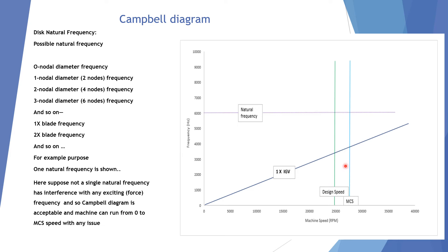In this case, you can see that the natural frequency does not intersect anywhere with the force frequency up to MCS. So we can say the Campbell diagram is acceptable and the machine is safe to run from zero to MCS speed.